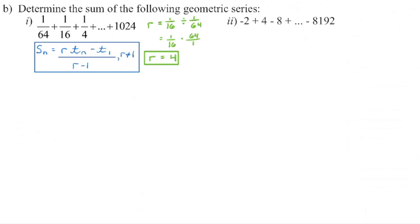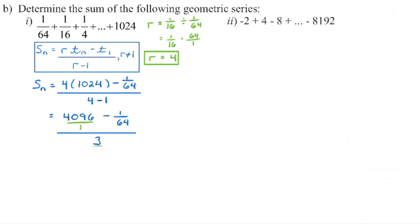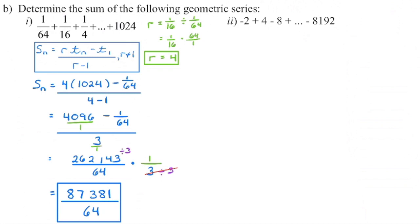We're going to substitute in: the last term is 1,024, the first term is 1/64, and we've already found the common ratio is 4. When we go to simplify, first simplify the numerator as much as possible, then the denominator, before dividing. Using order of operations, we multiply first, and when we subtract, we need a common denominator of 64. So 4,096 times 64 minus 1 gives us the numerator, and the denominator of 64 stays the same. When dividing fractions, change division to multiplication and reciprocate — so 3 over 1 becomes 1 over 3. Then look for common factors: the numerator is divisible by 3, giving our final answer.